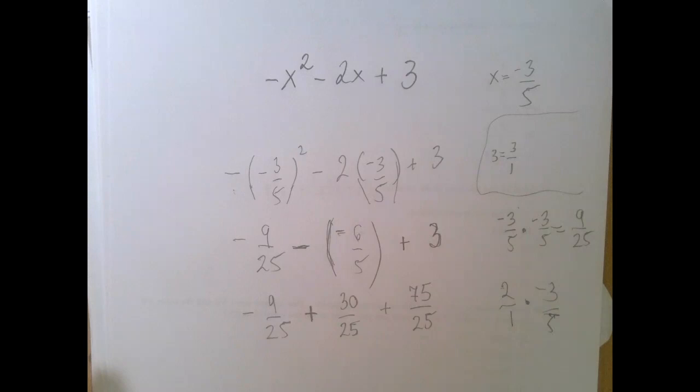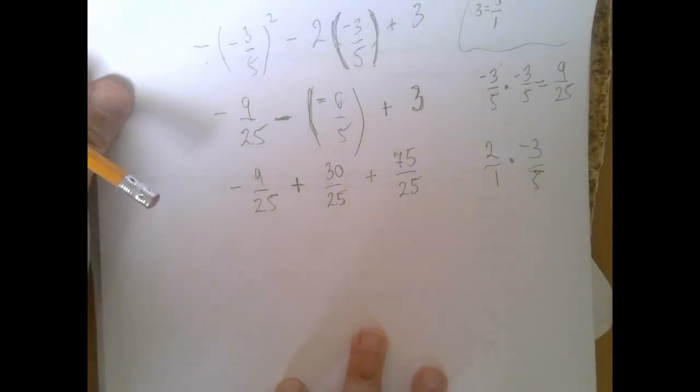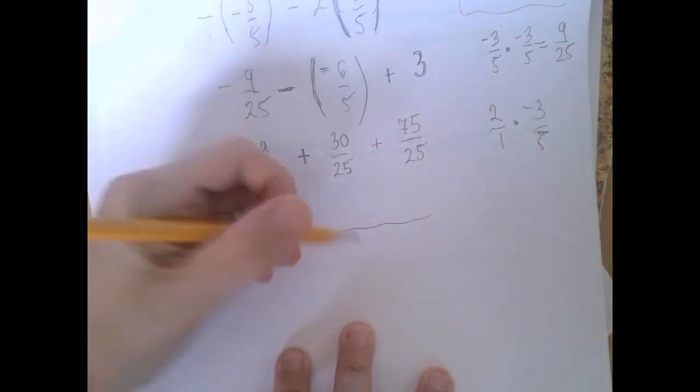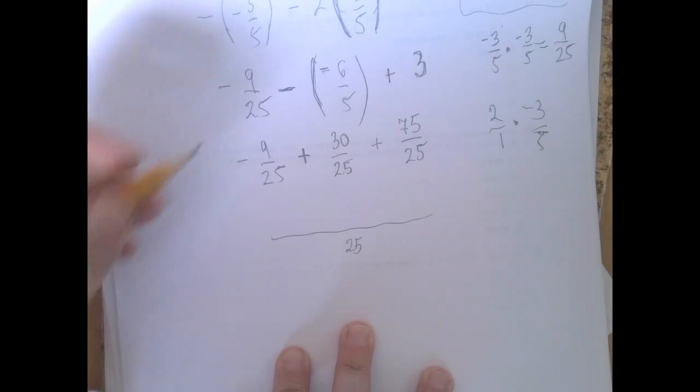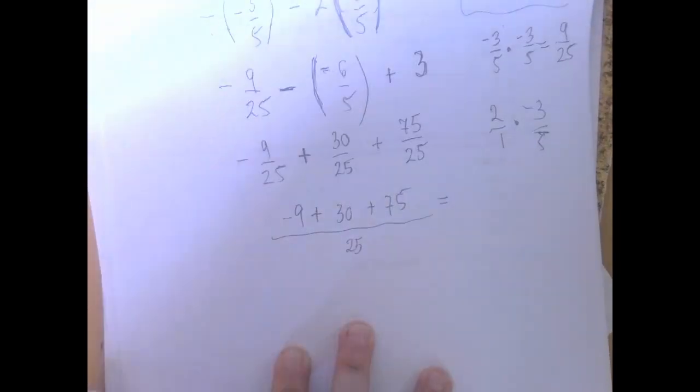This is not an order of operations problem, so you don't have to have a separate line for every step, but you shouldn't go faster than it is safe either. We have the common denominator, which is 25. And in the numerator, we're adding negative 9 plus 30 plus 75.